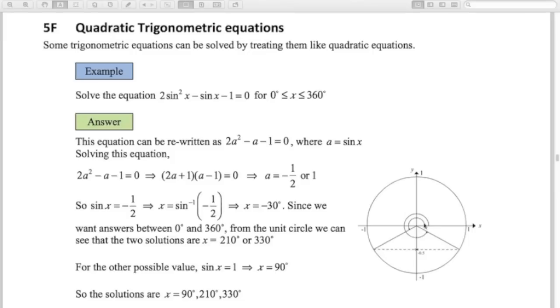You can see this other angle I've drawn on here, which also gives me a sine value of negative 1 half. Now, just using the symmetry, that angle is 180 plus 30, which is 210. So there are angles in the range that we're looking for, so 210 and 330 are two solutions.